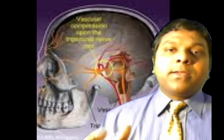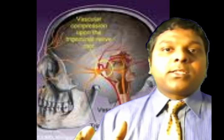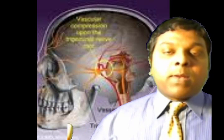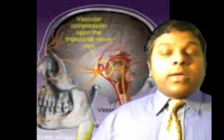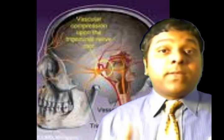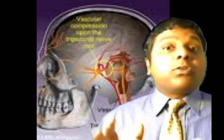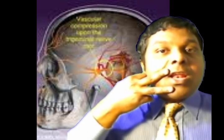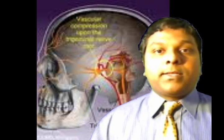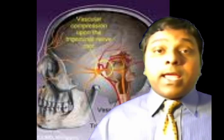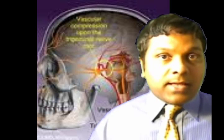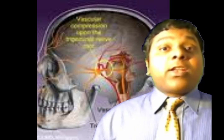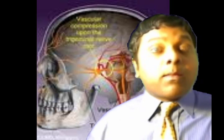Trigeminal neuralgia is very important for examinations. It presents as repetitive, unilateral, lightning-like, stabbing pain lasting a few minutes with spontaneous abatement. There can be intervals of minutes, hours, or weeks between attacks, but they don't go away on their own — you have to treat them. Most commonly the maxillary and mandibular divisions are affected. Diagnosis is made by history; you don't typically need a diagnostic test.